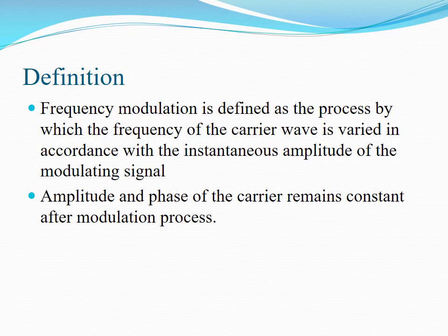First, we see the definition of Frequency Modulation. Frequency Modulation is defined as the process by which the frequency of the carrier wave is varied in accordance with the amplitude of the modulating signal. That is, based on the changes in the amplitude of the modulating signal, the frequency of the carrier wave is also changing. This is called Frequency Modulation. But the amplitude and phase of the carrier remains constant after the modulation process also.